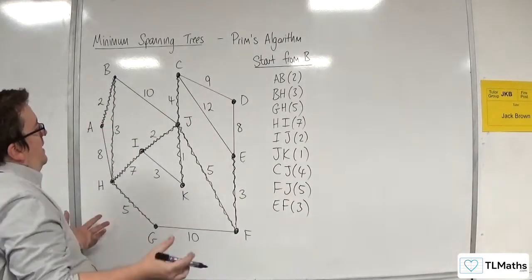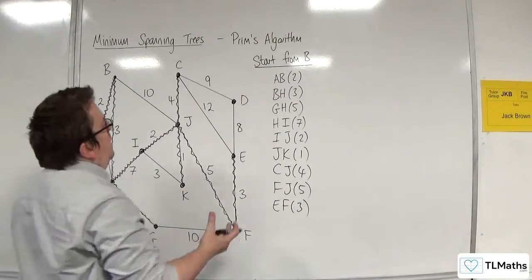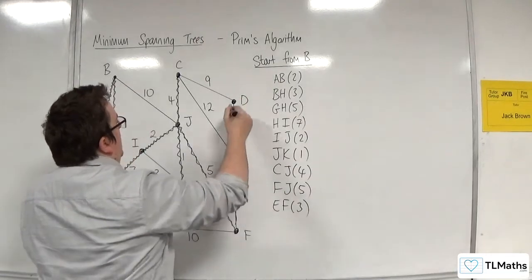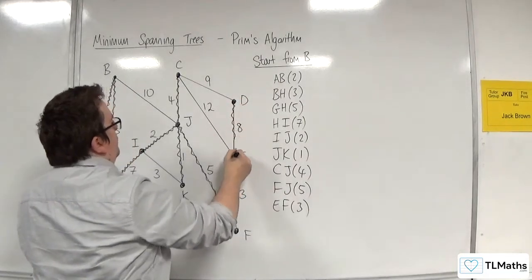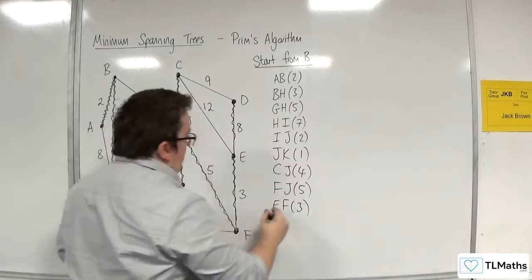And then the only one left to connect is D, which will be connected through this 8 because that's the smallest of those three options. So DE with 8.